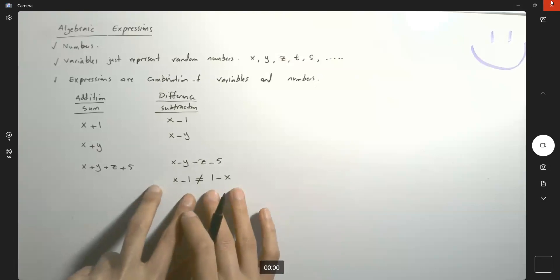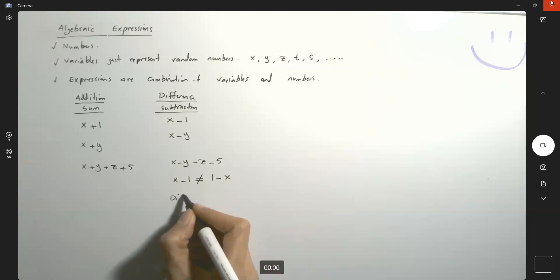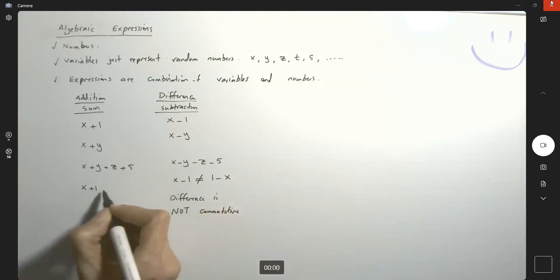Just note that x minus one in general is not equal to one minus x. We cannot just switch the role of these two elements. In general, it's not commutative. So difference is not commutative. It doesn't commute. But for addition, it is commutative. We don't have any issue with x plus one and one plus x being equal to each other. So addition is commutative.